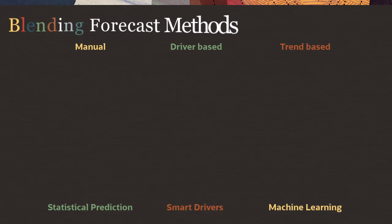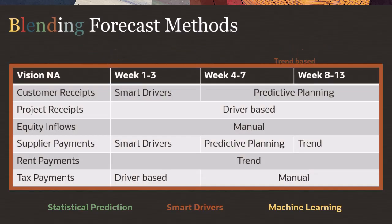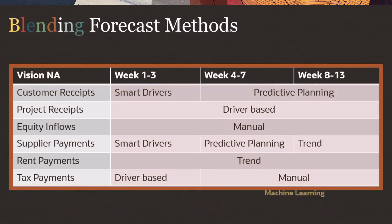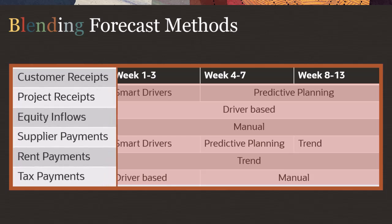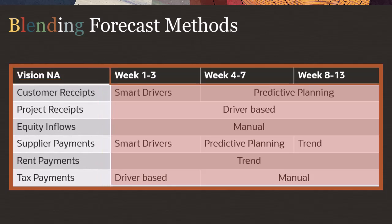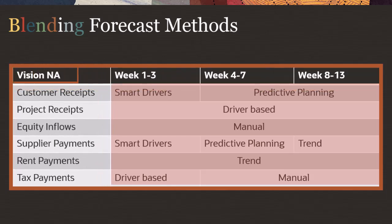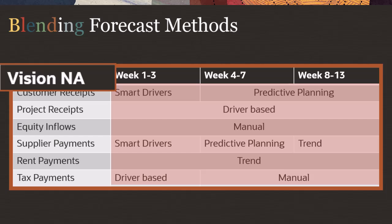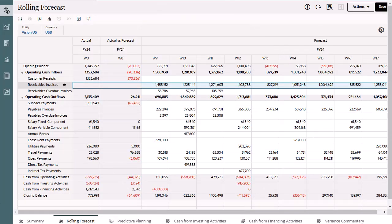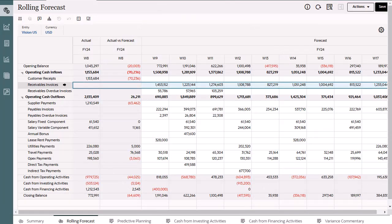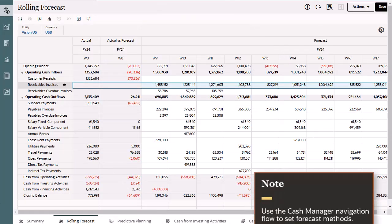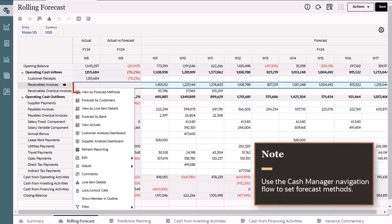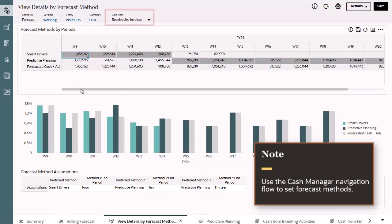Additionally, with predictive cash forecasting you can blend forecast methods by using different forecast methods for different line items, having different methods across different period ranges as well as by entities. Predictive cash forecasting helps you in deciding the forecast methods as well as the suitable time periods for your line items.